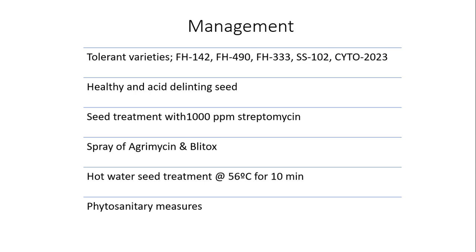Spraying with Agrimycin or Pletox should be done. Hot water seed treatment should be carried out for 10 minutes at 56 degrees centigrade. Phytosanitary measures should be adopted so that the disease does not spread in the field. That was all about bacterial blight of cotton — I hope you like this video, thank you very much.